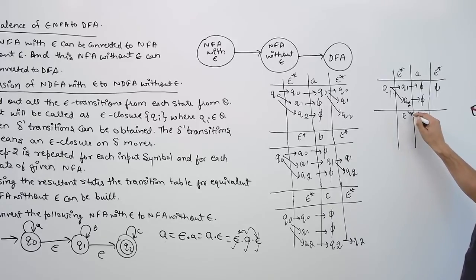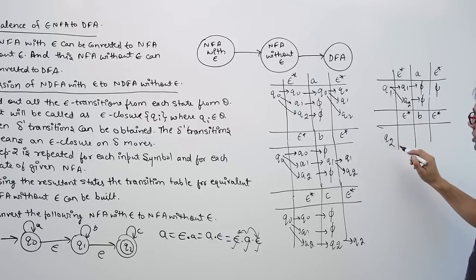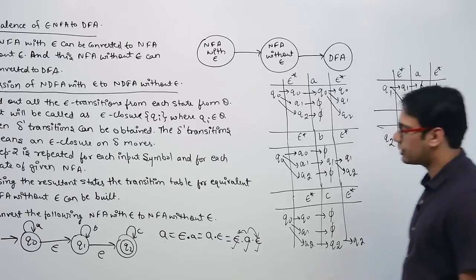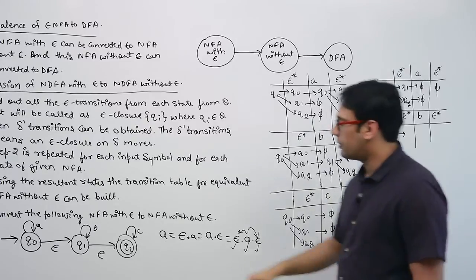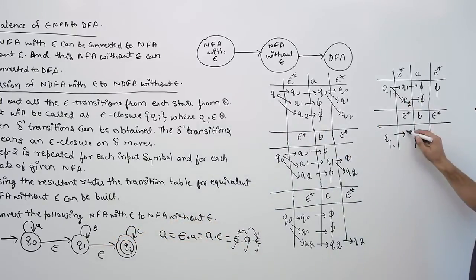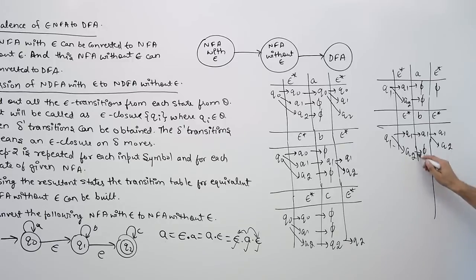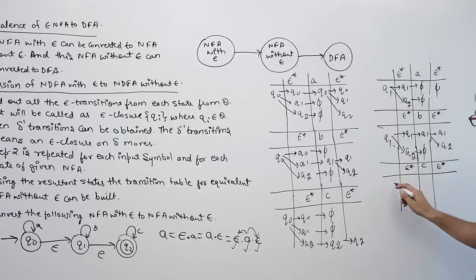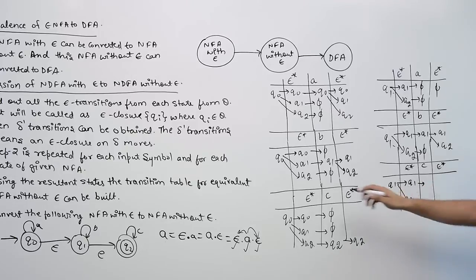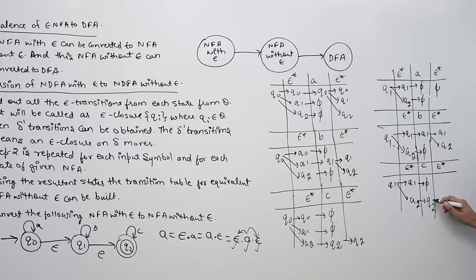For Q1 on symbol B: Epsilon closure of Q1 is {Q1, Q2}. From Q1 on B, we go to Q1; from Q2 on B, we cannot go anywhere. The Epsilon closure of Q1 is {Q1, Q2}. So from Q1 on B, we go to {Q1, Q2}. For Q1 on symbol C: Epsilon closure of Q1 is {Q1, Q2}. From Q1 on C, we go nowhere; from Q2 on C, we go to Q2. Epsilon closure of Q2 is Q2. So from Q1 on C, we go to {Q2}.